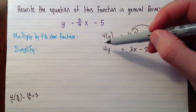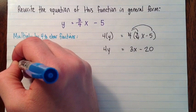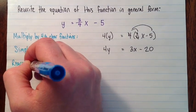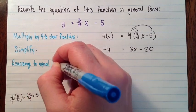And now I'm going to put all the terms on one side. So rearrange to equal 0. Just because that's what general form looks like.